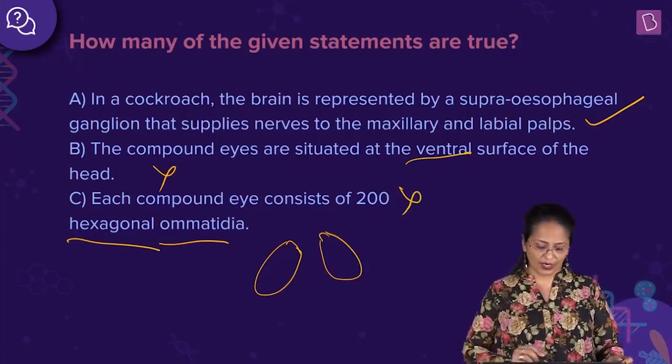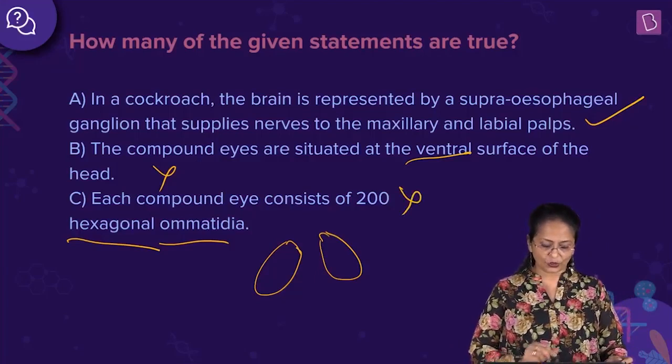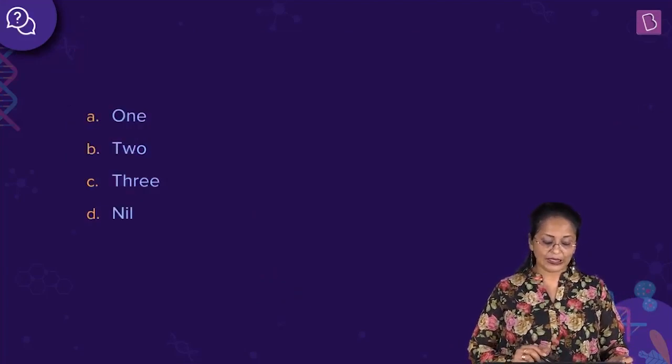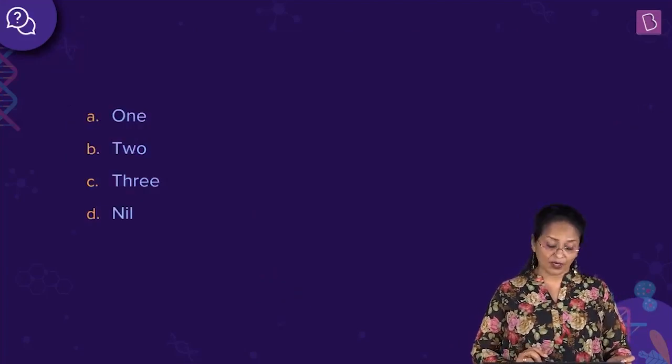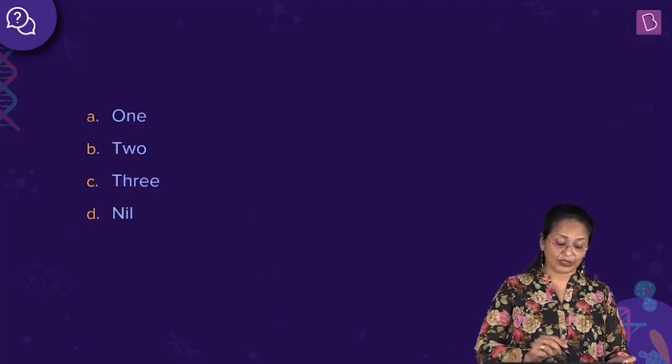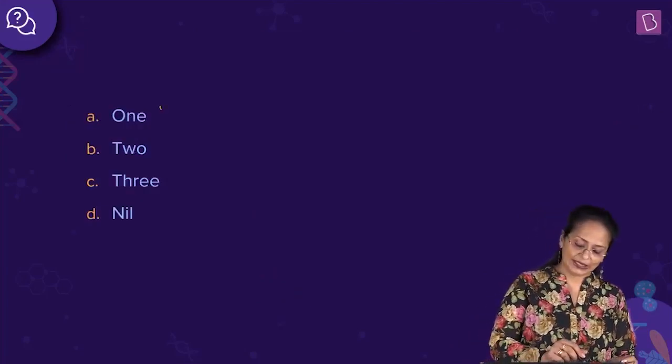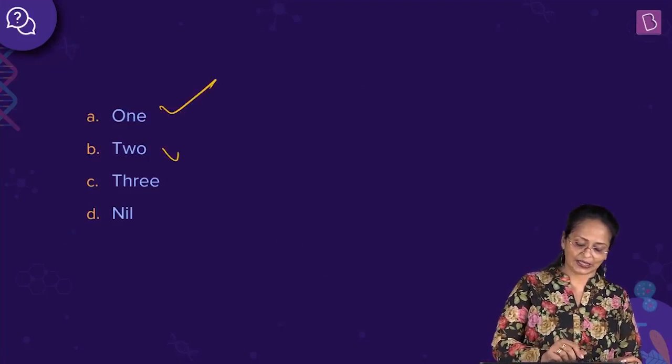So how many statements are true? It is only one. Looking at the options — A is 1, B is 2, C is 3, D is nil — the answer is A. That is correct.